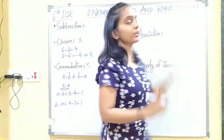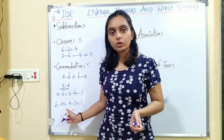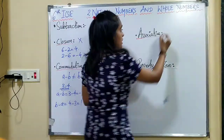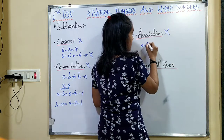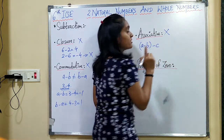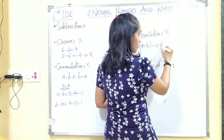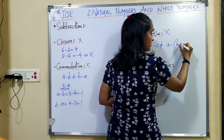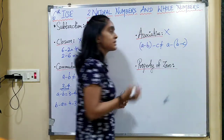Now, associative property. As commutative property does not hold, associative property also does not hold. That is, (a minus b) minus c is not equal to a minus (b minus c).